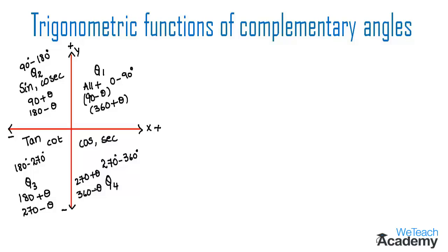There is a simpler way to remember when trigonometric functions are positive or negative in respective quadrants. Just remember the formula: all silver tea cups. All means all ratios are positive in quadrant 1. Silver — the ratio starting with S, which is sine and its reciprocal cosecant, are positive in quadrant 2.